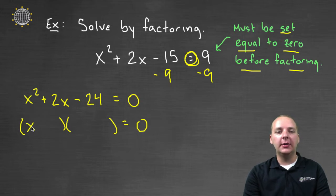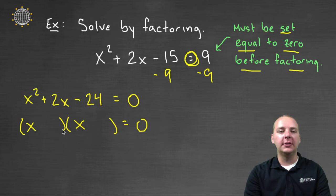To get x squared, this would have to be x times x. X times x is the only way to get x squared with a variable in the first term and a variable in the second term. And then for the last two places, you need something that will multiply to negative 24 and add to positive 2.